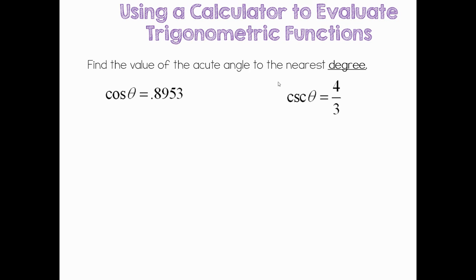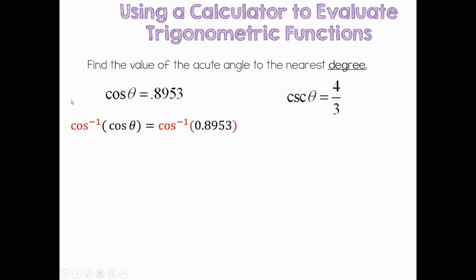You can change the mode on the TI-84 by pressing Mode, scrolling down to Degree, and hitting Enter. So for cosine of theta equaling 0.8953 in degree mode, we're going to solve for theta. What we're trying to find is isolating theta. Prior to this I told you never to use the inverse of cosine, but now we are because we're going to undo that function. We take cosine inverse of both sides — cosine inverse and cosine cancel each other out, just like the inverse of addition is subtraction. So we're just left with theta equaling the cosine inverse of 0.8953.